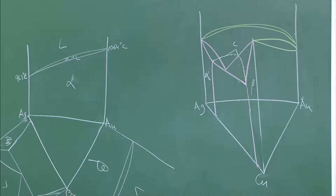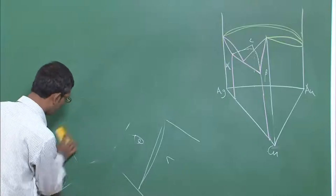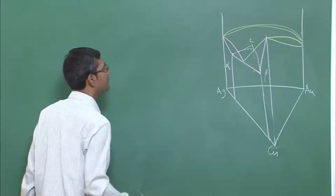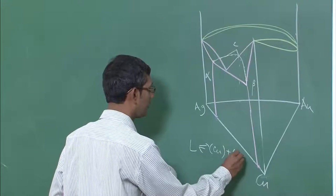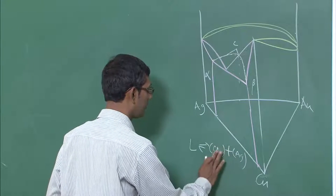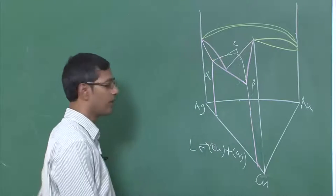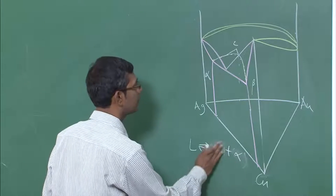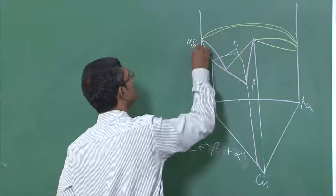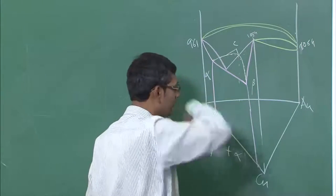This is the phase diagram for silver, gold, and copper showing three-phase equilibrium. Now I will show an example of a four-phase equilibrium. This three-phase equilibrium involves the reaction: liquid going to solid solution of copper and solid solution of silver — that is, alpha and beta. The eutectic reaction extends inside the ternary system, with melting temperatures of 961, 1064, and 1084 degrees Celsius.